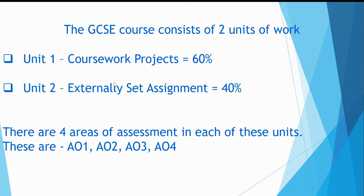The GCSE qualification in art is awarded to students when they complete the two units of work. Unit 1, as you can see, is coursework starting at the beginning of Year 10. The Art and Design coursework element is delivered through Year 10 and 11, and the course is designed to give students the opportunity to explore a wide range of skills, both new and old, in 2D and 3D techniques. This allows each student to decide what their strengths are and they have a choice to focus on these skills in Year 11.